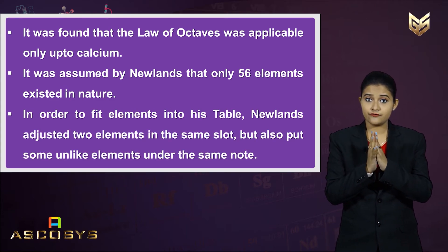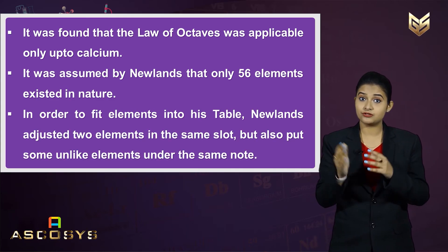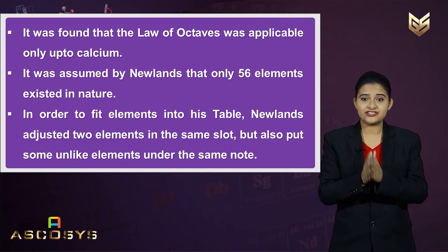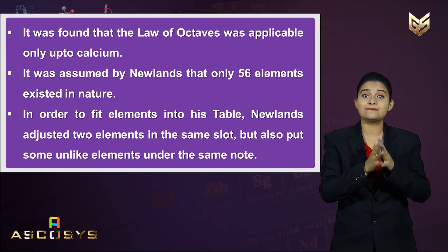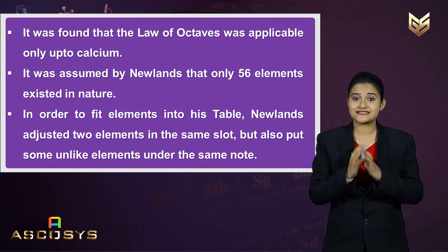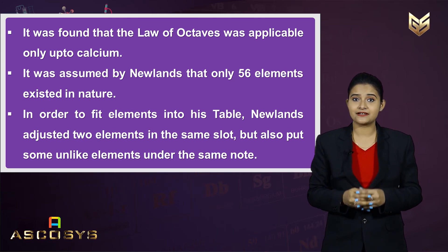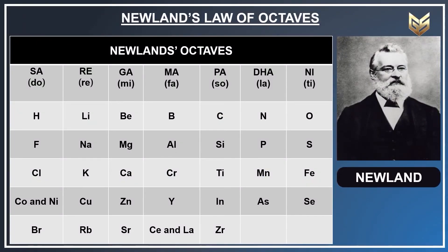Next, in order to fit elements into the table, Newlands placed two elements in the same slot and also put some unlike elements under the same note. For example, cobalt and nickel are in the same slot and are placed in the same column as fluorine, chlorine, and bromine, which have very different properties. Furthermore, iron, which resembles cobalt and nickel in properties, has been placed far away from these elements.